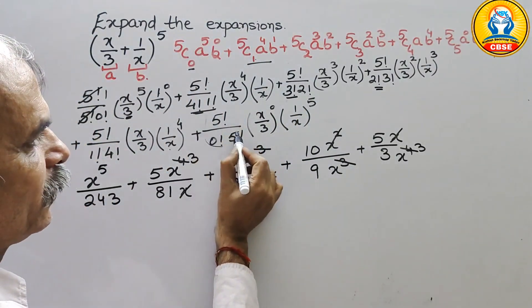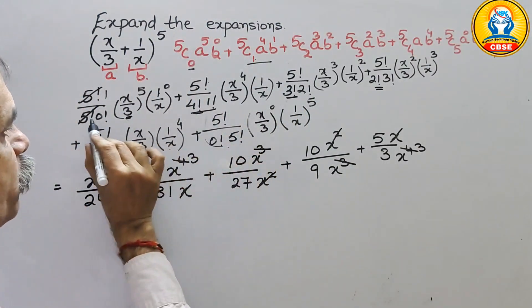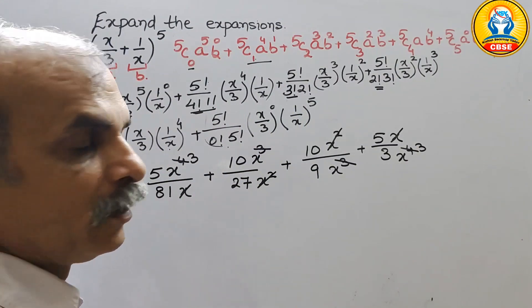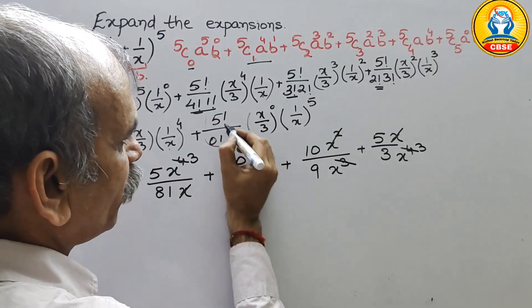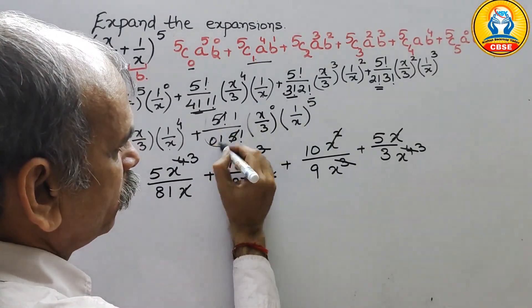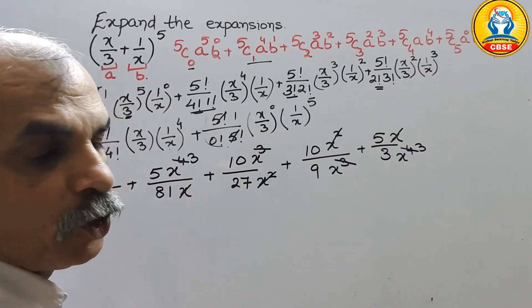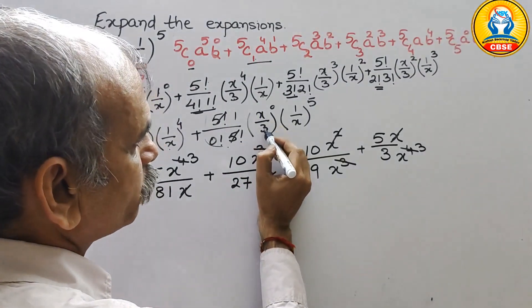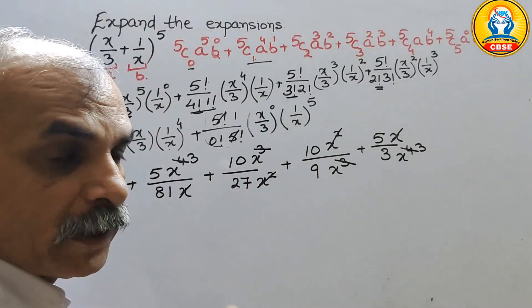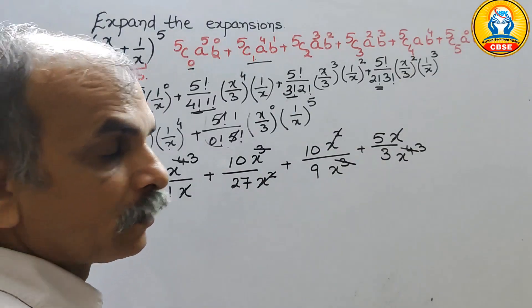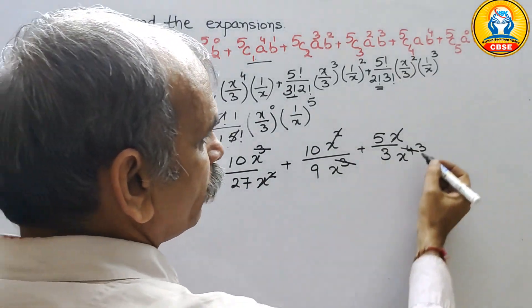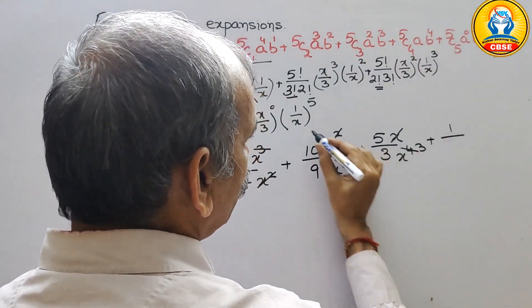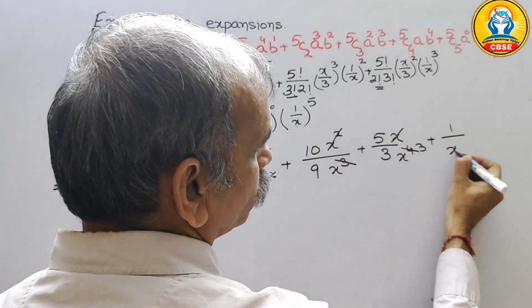Next comes the last term, 5C5. The 5 factorials cancel giving 1, and (x/3) to the power of 0 is 1, so we get 1 divided by x to the power of 5.